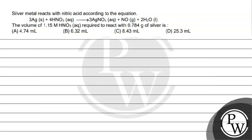Hello kids, let's read this question. The question says silver metal reacts with nitric acid according to the equation. This is our equation. The volume of 1.15 mol HNO3 required to react with 0.784 gram of silver is: option A 4.74 ml, option B 6.32 ml, option C 8.43 ml, option D 25.3 ml. The key concept for this question is molarity.